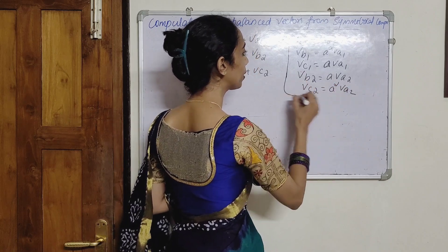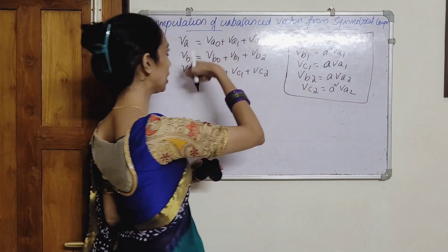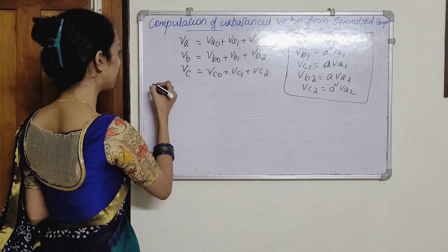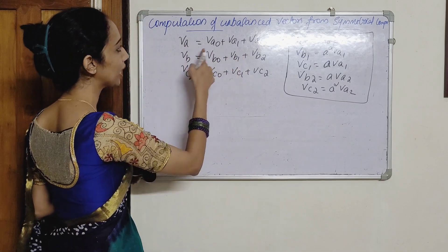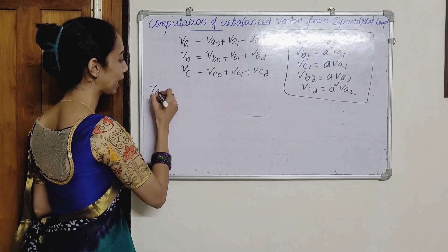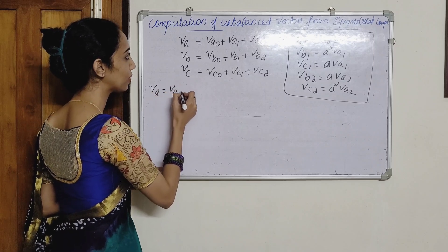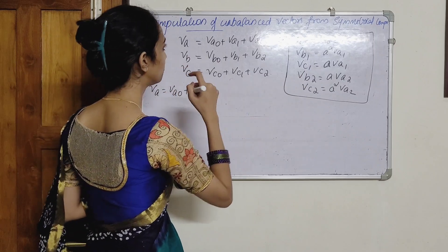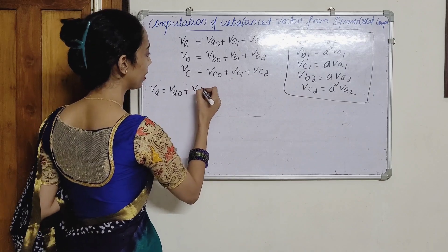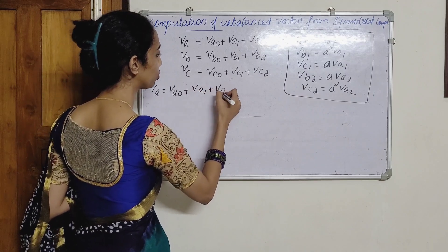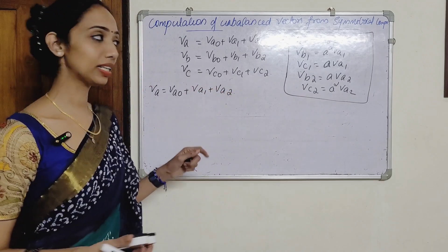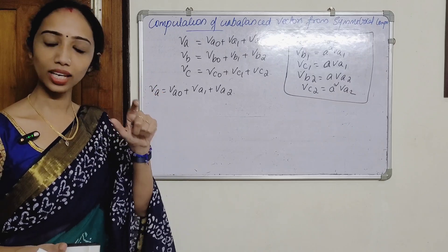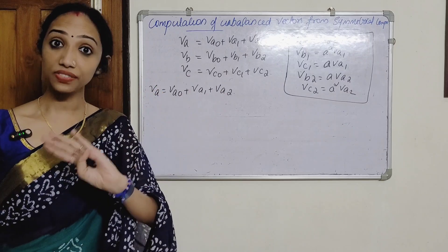What are we doing now? Substitution — 1, 2, 3 values. Therefore, Va is equal to Va0 plus Va1 plus Va2.